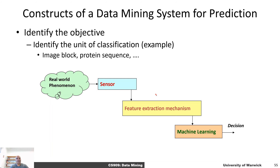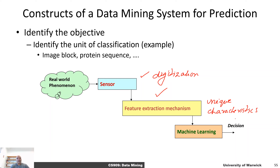Sensors are used for digitization and representation of data. Once we have that, we extract unique characteristics of different examples. Then we can use a machine learning model such as a support vector machine, neural networks, random forests, or other types of machine learning models that we'll discuss in coming lectures. Once we have that, we generate a decision. This gives a good understanding of what's involved in developing all the applications we discussed.